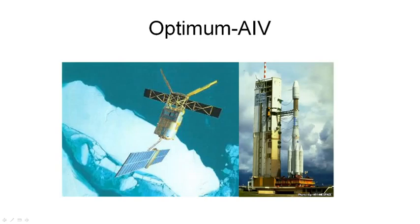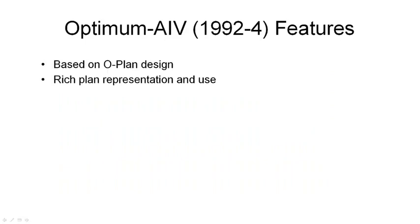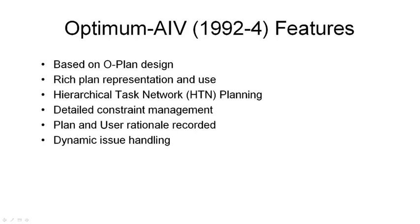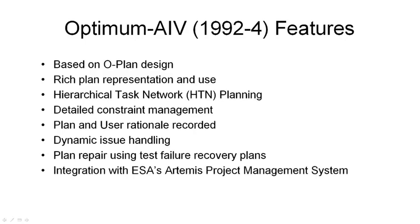Oplan was used as the basis for Optimum AIV, a planner for assembly, integration and verification of the payload bay of Europe's Ariane rocket launcher. It was originally designed as Plan ERS-1 for assembly, integration and test of the European Space Agency's ERS-1 spacecraft, shown here on the left. Optimum AIV also used the rich plan representation, hierarchical task network planning, and detailed constraint management. Plan and user rationale were recorded, it could handle issues arising during plan execution through plan repair using test failure recovery plans, and it was integrated with the European Space Agency's Artemis project management system.